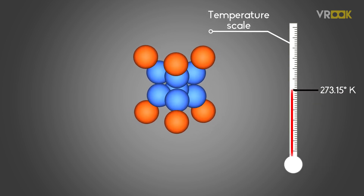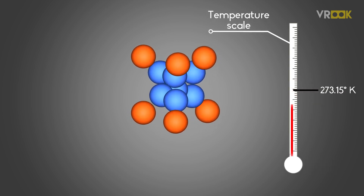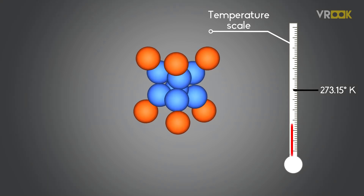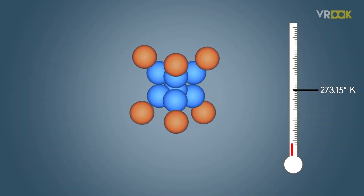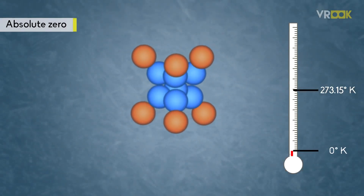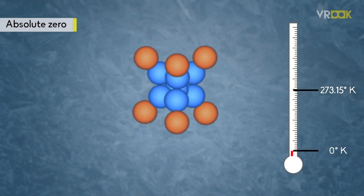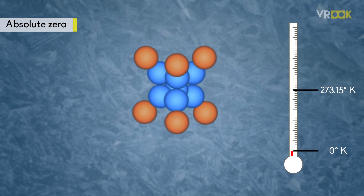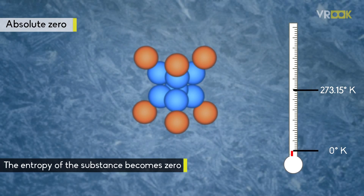As per the third law of thermodynamics, when such a substance is cooled to zero degrees Kelvin, all the movements of all the molecules stop completely and the entropy of the substance becomes zero. This is an ideal condition.